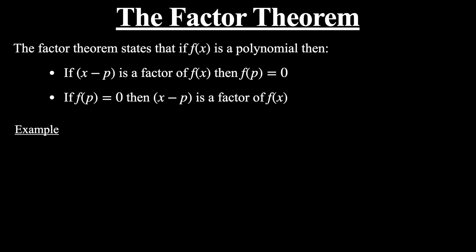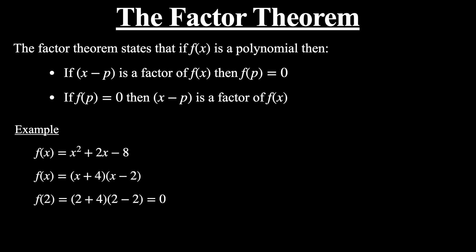Let's look at an example to explain what these two statements mean. Consider this quadratic function: f(x) = x² + 2x − 8. We can factorize this into (x + 4)(x − 2). If we plug in 2 for x, we get f(2) = (2 + 4)(2 − 2). This is 0 because 2 minus 2 is 0, and 0 times anything is 0.